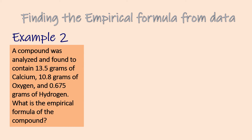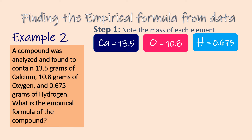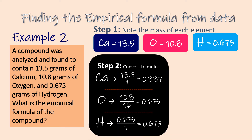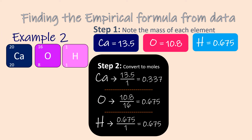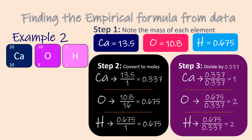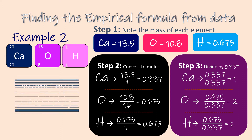Example 2: A compound was analyzed and found to contain 13.5 grams of calcium, 10.8 grams of oxygen, and 0.675 grams of hydrogen. What is the empirical formula of the compound? Following the same steps: Step 1, start with the number of grams of each element given. Step 2, convert the mass of each element to moles using the molar mass from the periodic table. Step 3, divide each mole value by the smallest number of moles calculated and round to the nearest whole number. The empirical formula of this compound is CaOH2.